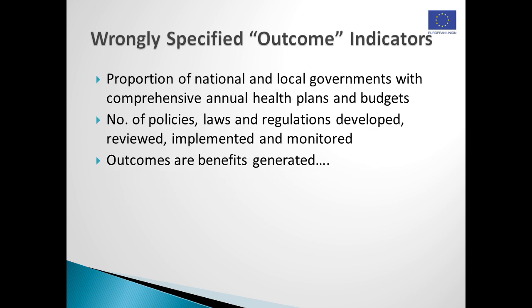It's not hard to find examples where ministries have proposed so-called outcome indicators which really are measures of activities. An example is the indicator: the proportion of national and local governments with comprehensive annual health plans and budgets. Once again, developing a plan or elaborating a budget is an activity — it's not even an output and it's certainly not an outcome. Because as we've seen, outcomes are beneficial changes which are generated for individuals or for society as a whole.